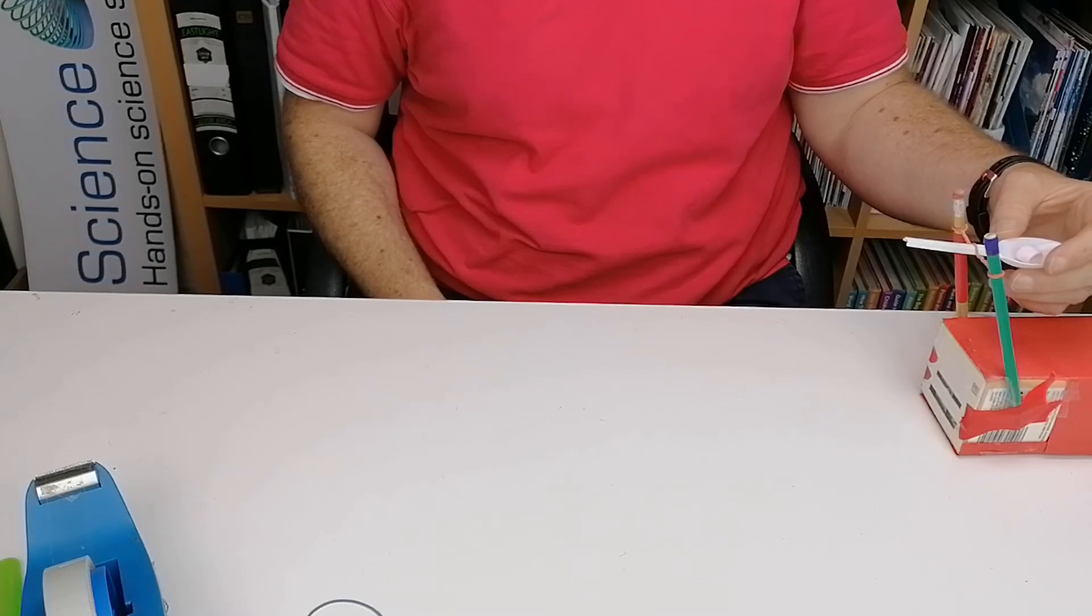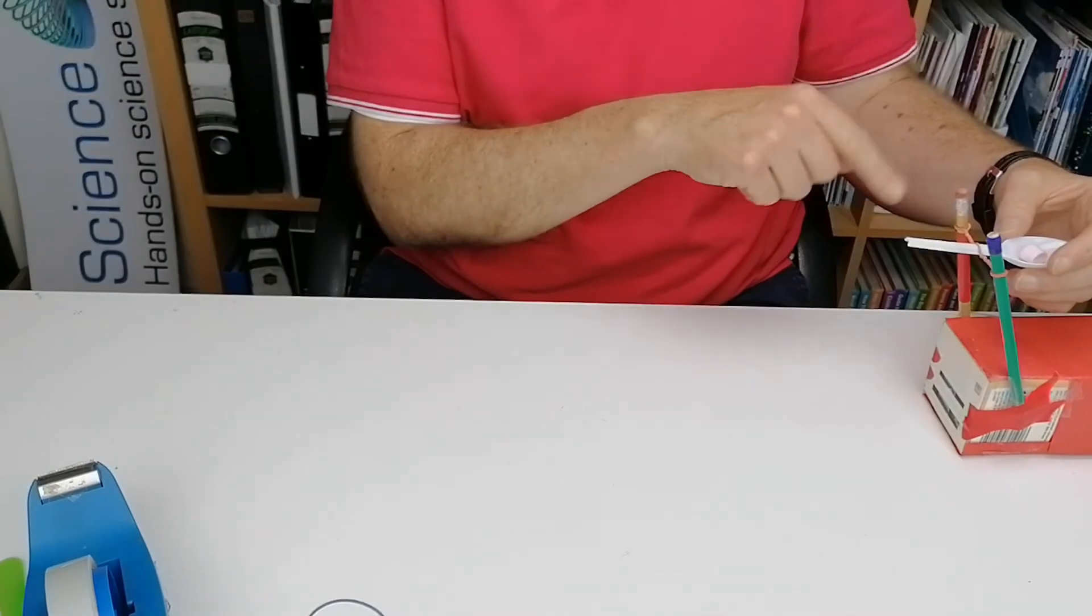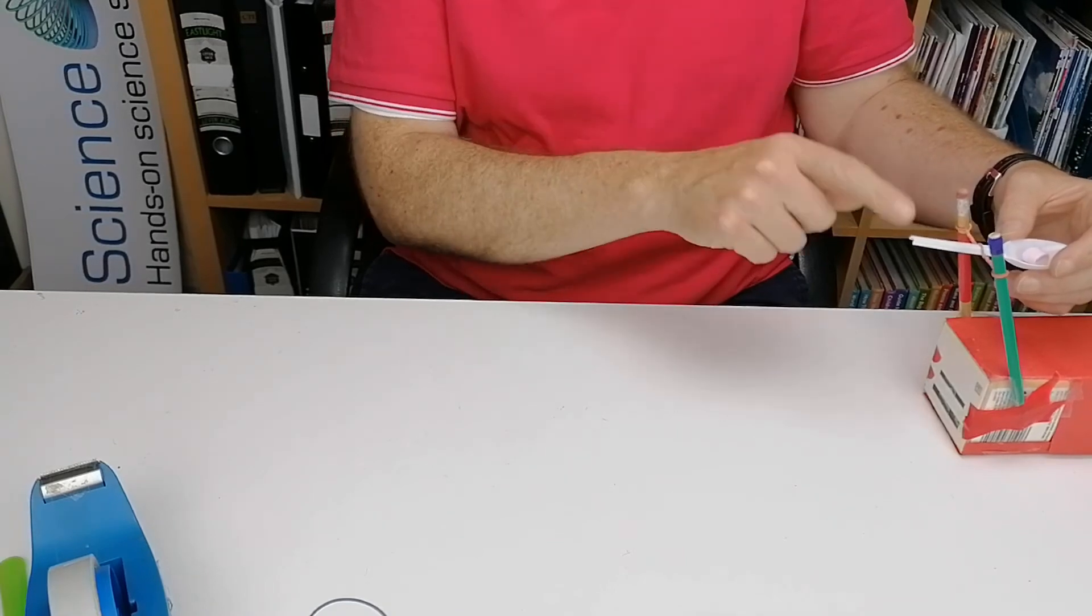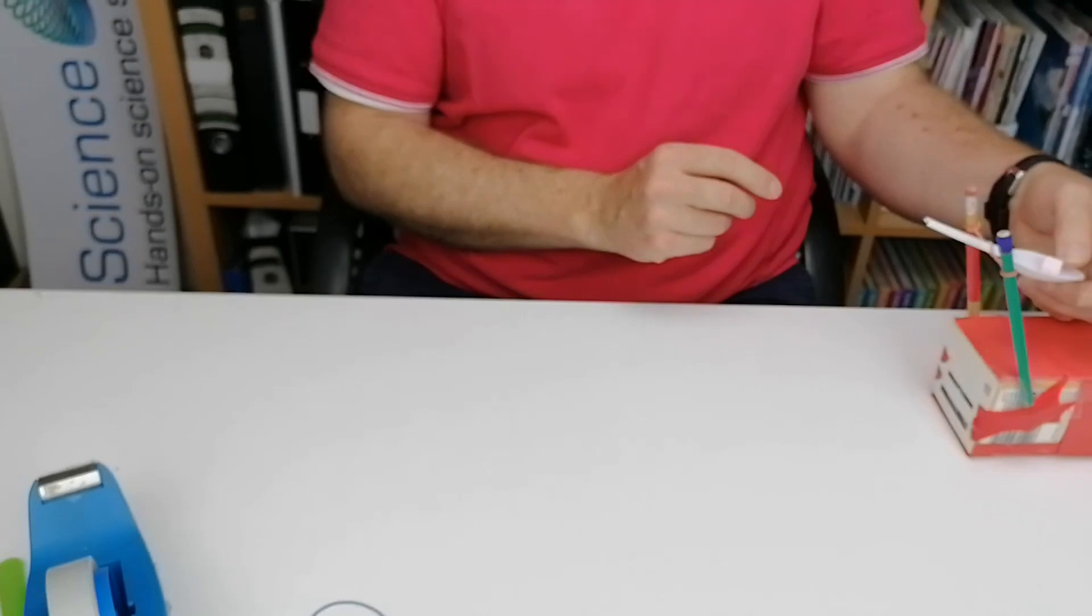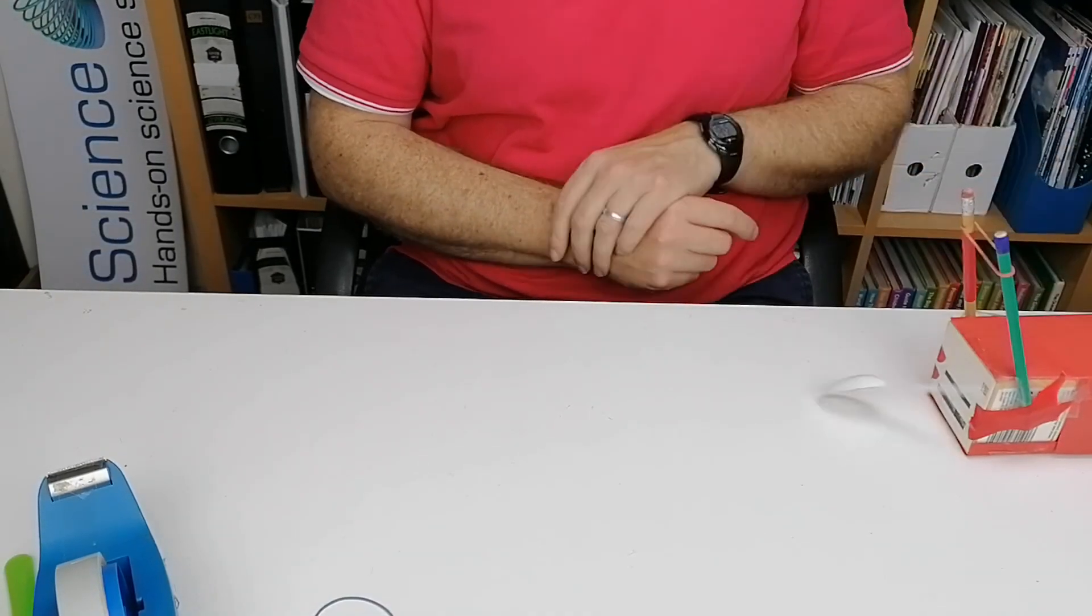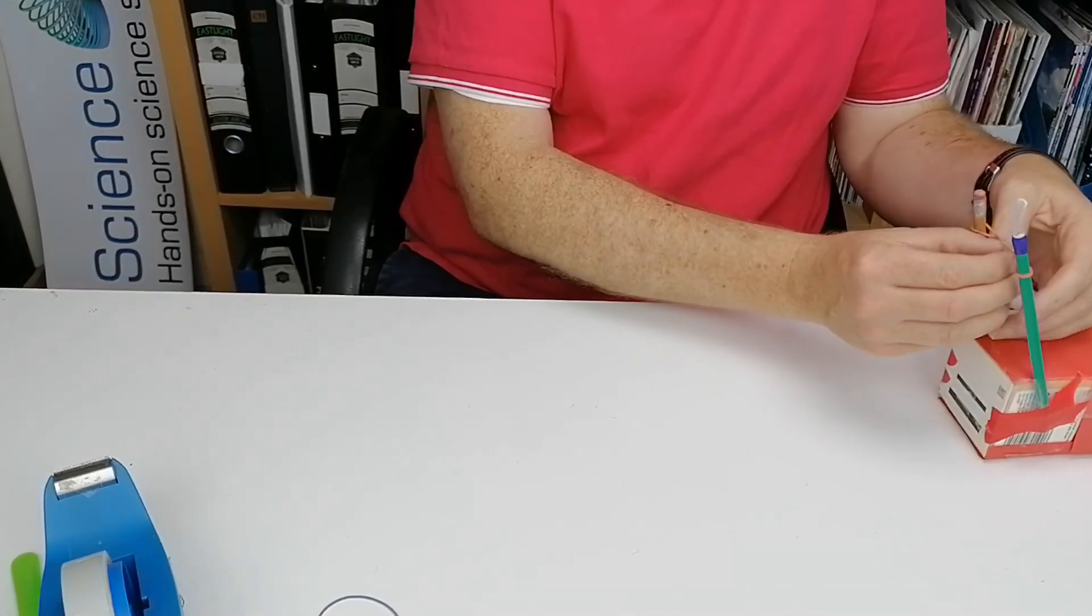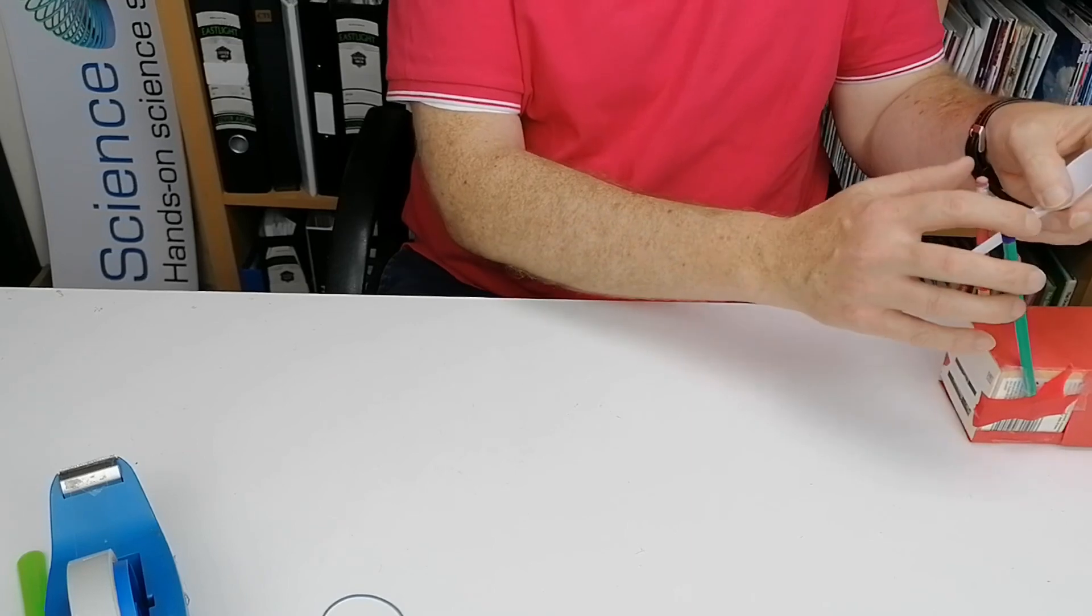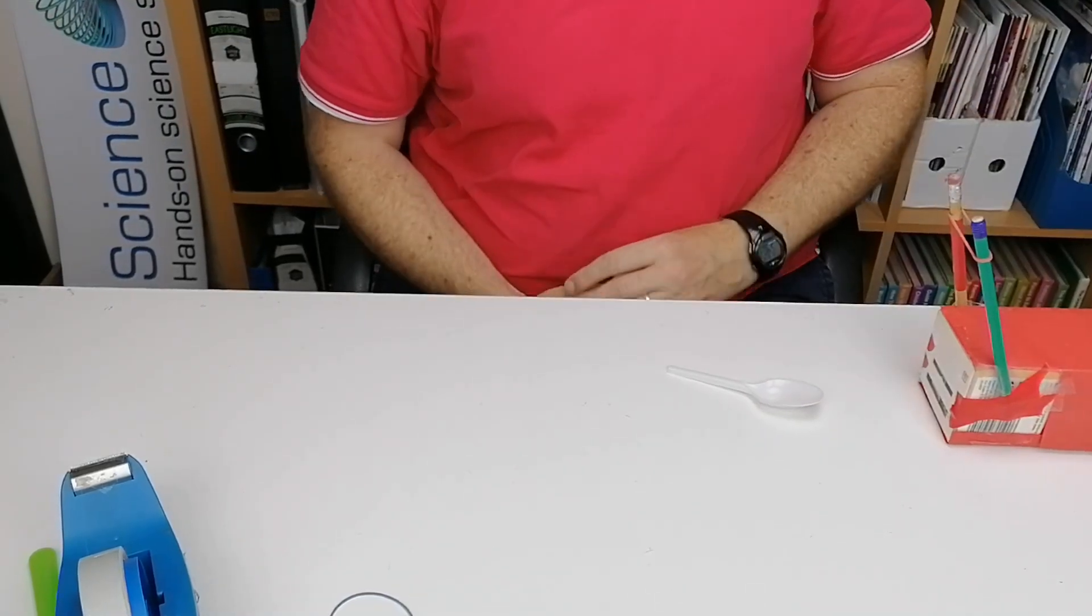The one thing I would like to say is, sometimes when the spoon spins around to the end, the spoon itself could fly off, so just be wary of that. So we'll see if this thinner elastic band gets any further. No, that actually didn't go as far as the other one. So play around with that and see how far you can get with this elastic band catapult.